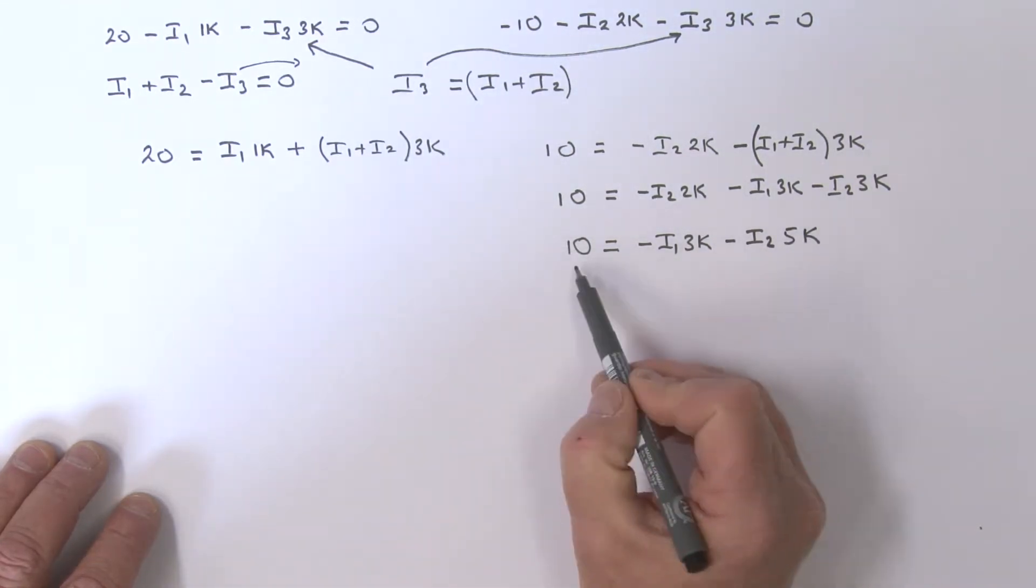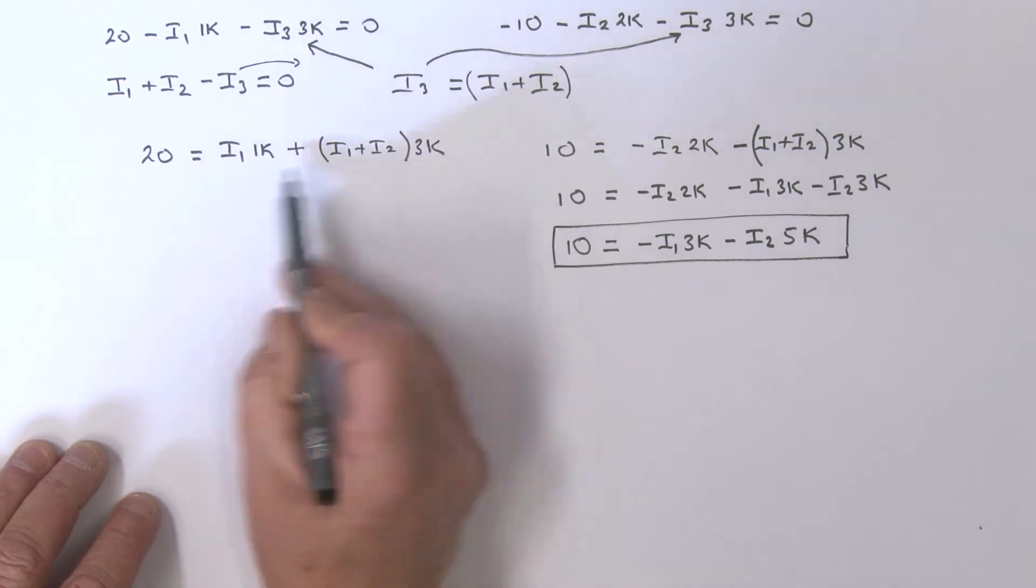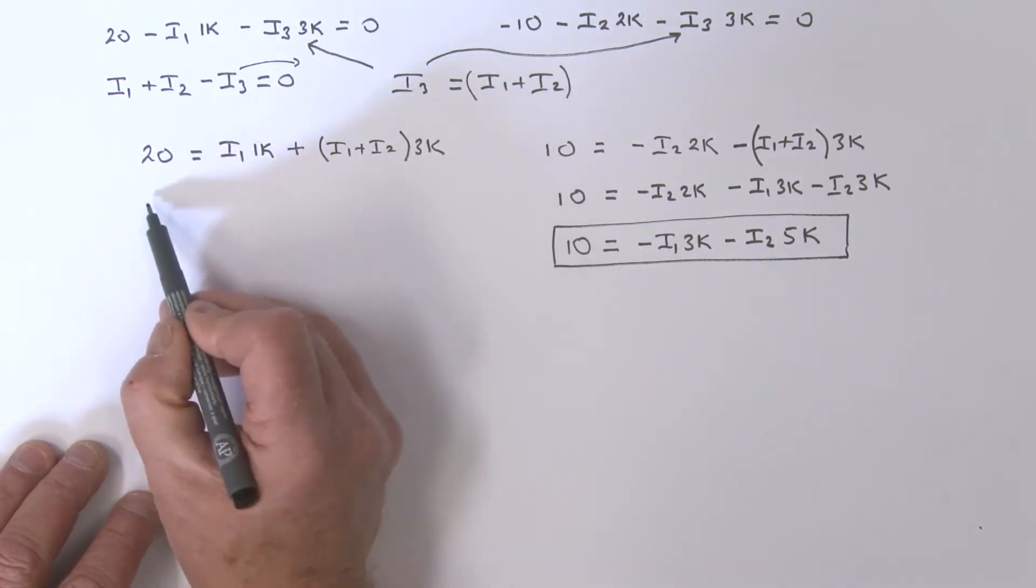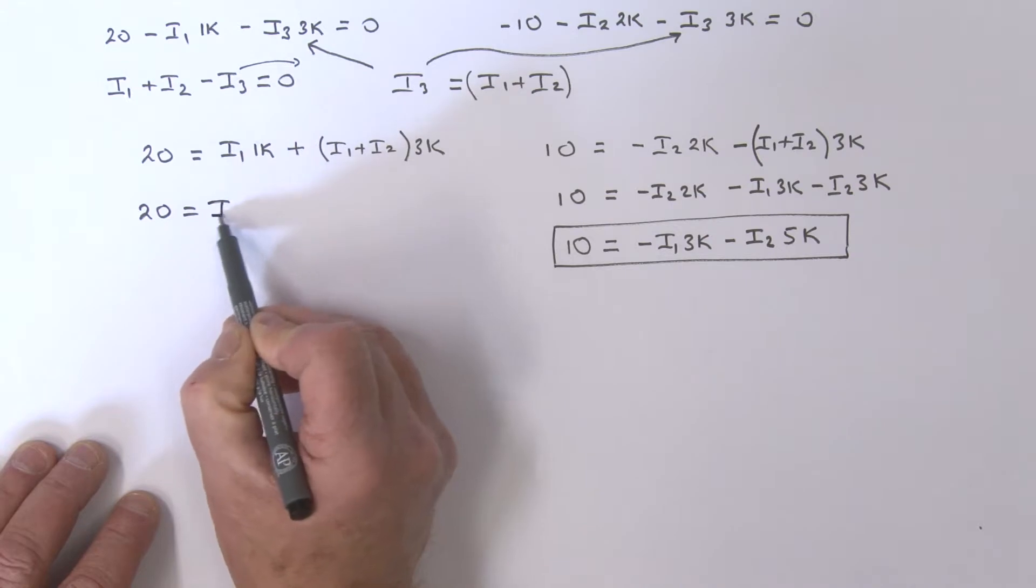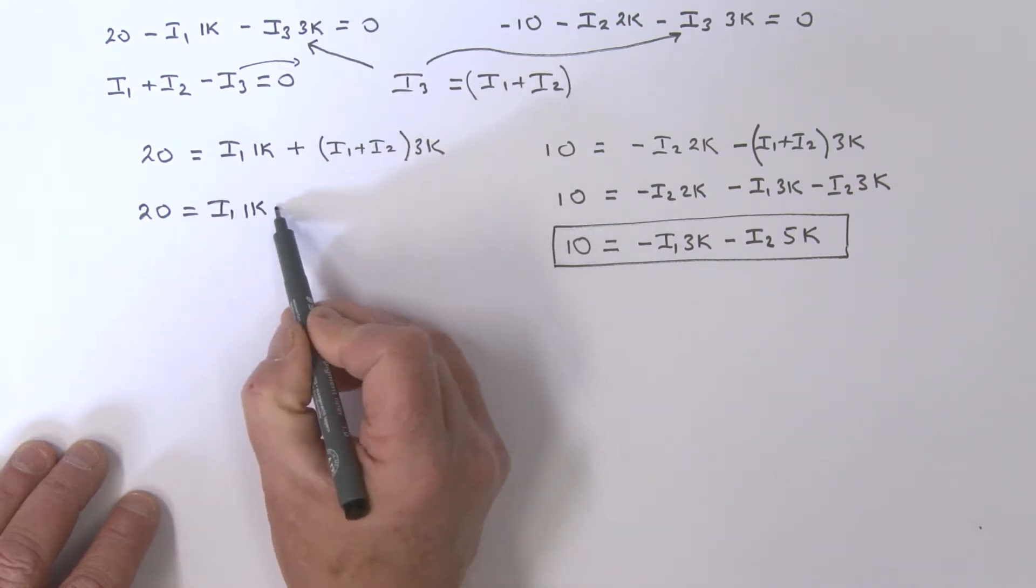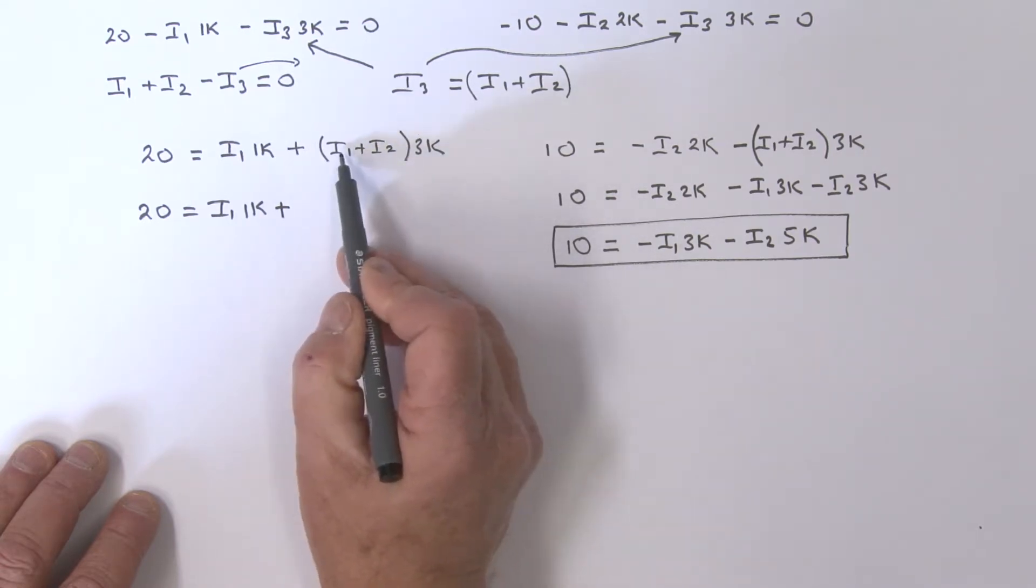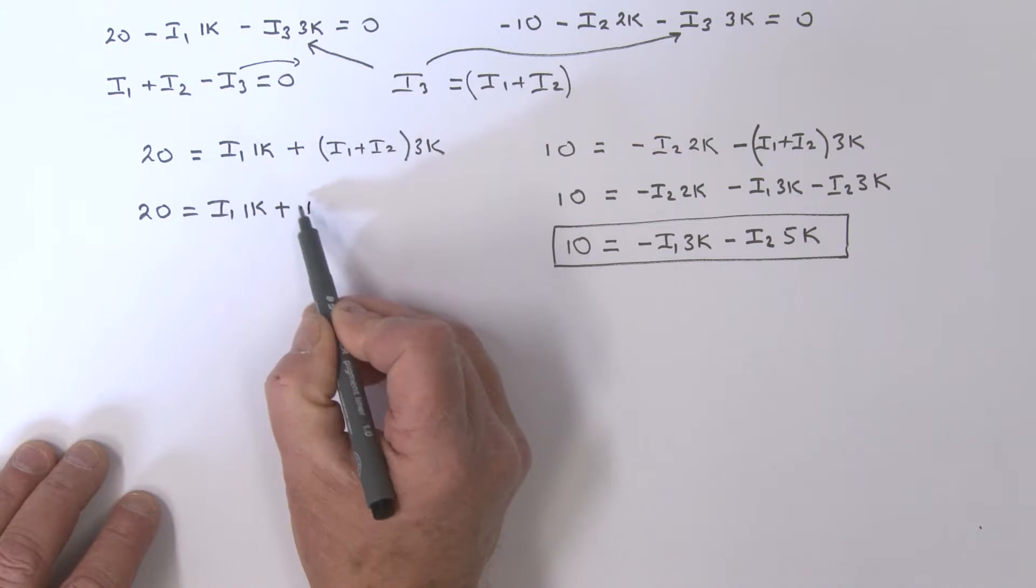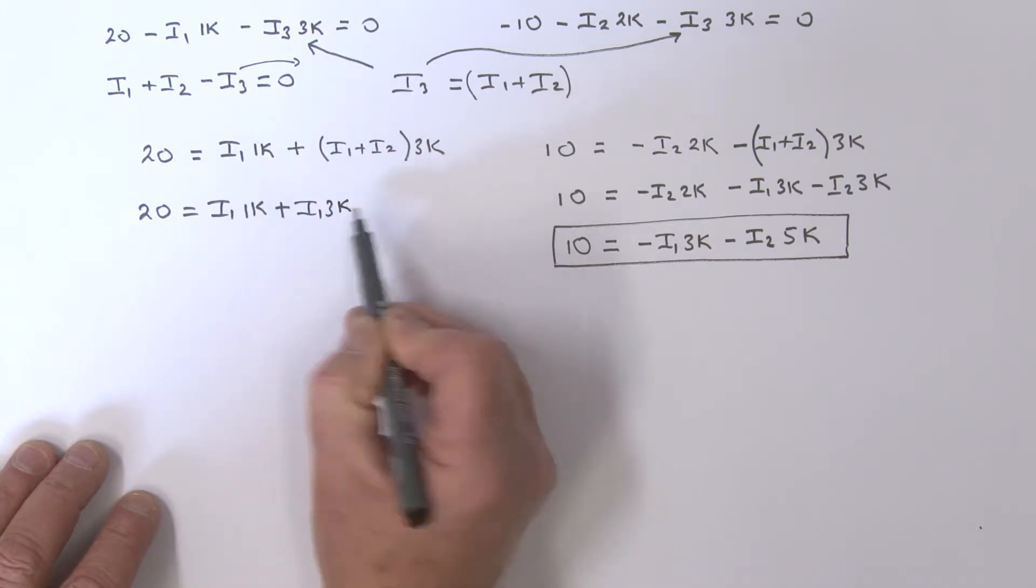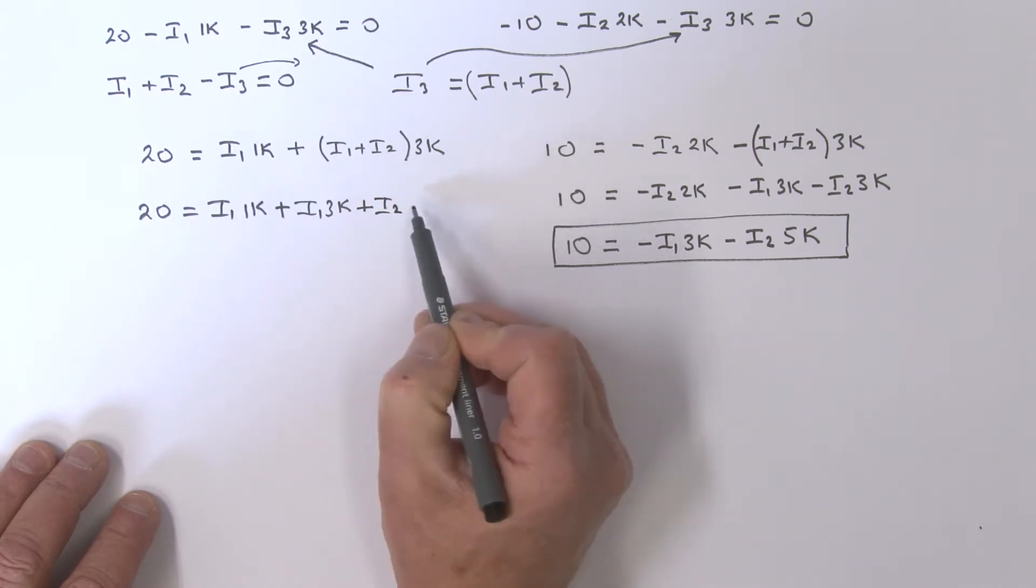All right, so we'll note that equation in terms of i1 and i2. Let's do the same thing over here. I've got 20 equals i1 times 1k. Let's expand the bracket. So that's a plus - I've got i1 times 3k, and then plus i2 times 3k.